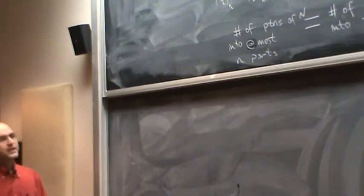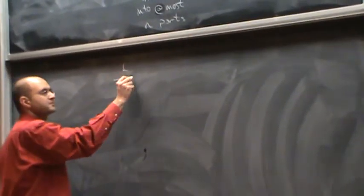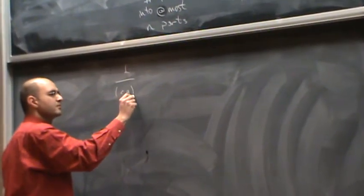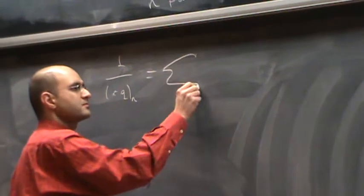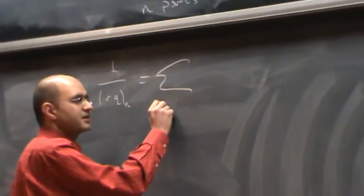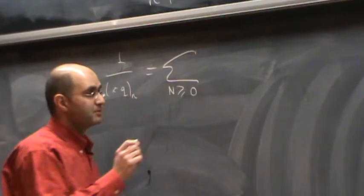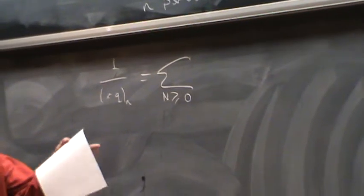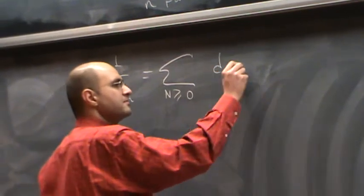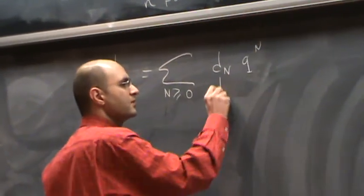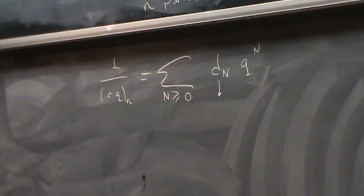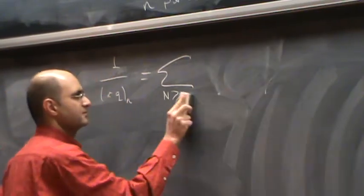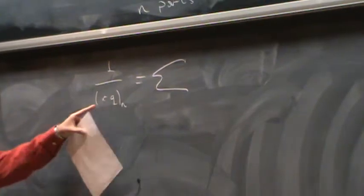We can do fancier things. We can look at 1 over x times q sub n. That's going to give you another series. Let's say capital N greater than or equal to 0. Let's say d sub n, q to n. This time, oh, wait. We will have a double series there.